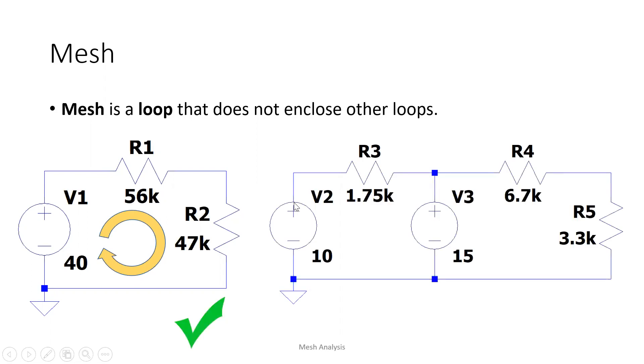So next one, this diagram. So this flow from 10 volts back to V2. So is this a loop? So this one is a loop, correct. But is this a mesh?